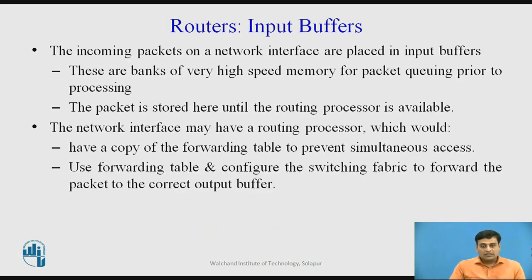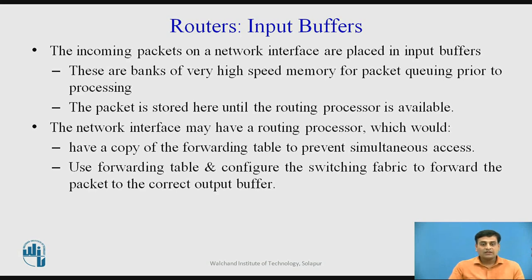Incoming packets on a network interface are placed into the input buffer, which is very high-speed memory for packet queuing before processing. The packet is stored there until the routing processor is available. The network interface may have its own routing processor with a copy of the forwarding or routing table to prevent simultaneous access issues. Using this forwarding table, it can configure the switching fabric to forward the packet to the correct output buffer.